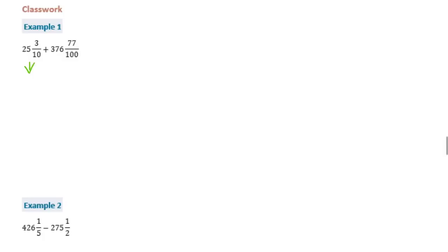So 25 and 3 tenths, I'm going to turn into 25 and 3 tenths plus 376 and 77 hundredths. If you remember from 5th grade how we say decimals and how we write them — this is the tenths place, hundredths place, thousandths place — then what you say when you say it as a fraction is how you write it as a decimal.